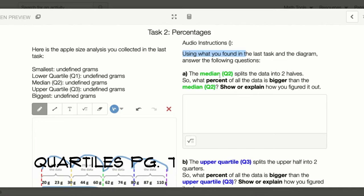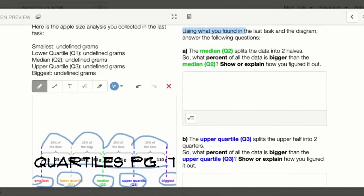Letter A: The median Q2 splits the data into two halves. So what percent of all the data is bigger than the median? Show or explain how you figured it out.